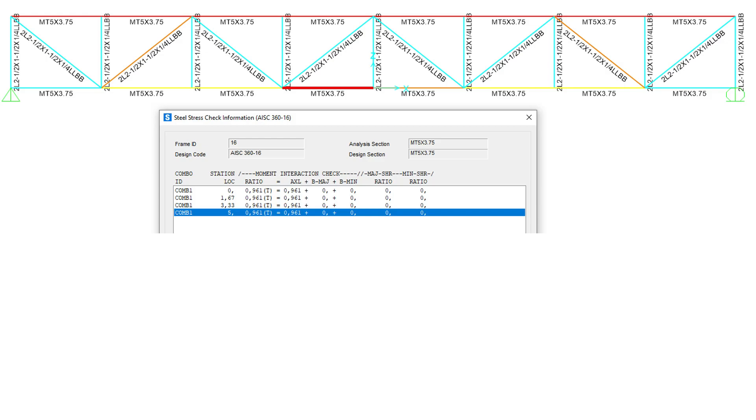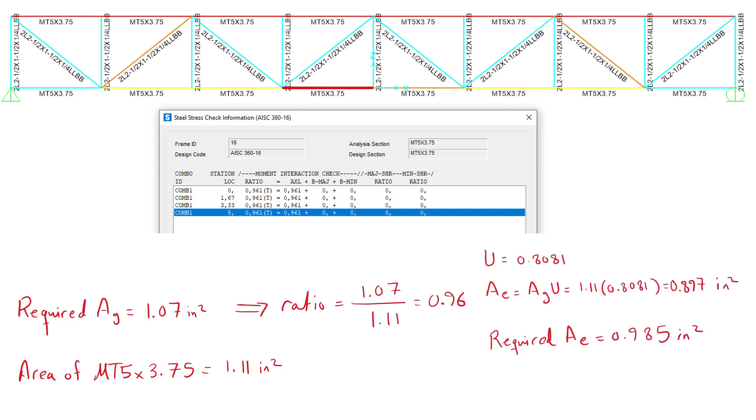Note that the utilization ratio of 0.961 is coming from the required gross area divided by the available area. This does not consider the end welded conditions that would determine the shear lag factor U. This makes the available effective area 0.897 square inches and the required effective area is 0.985 square inches. This will make the utilization ratio greater than 1 and thus classifying the member as insufficient for this load. This emphasizes the importance of joint assessment whether by a specialized software or by hand.